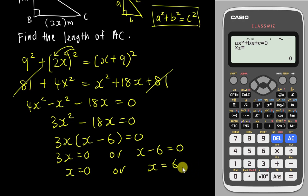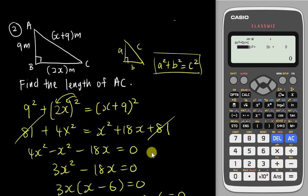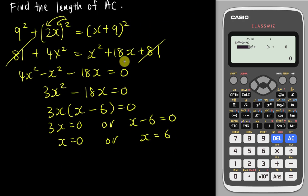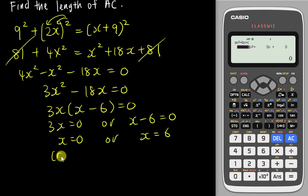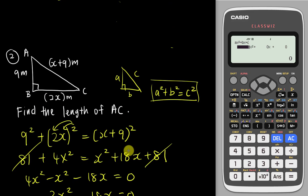But this is not the final answer — the question asks for the length of AC. Since x equals 0 would make the length of BC equal to 0, which is impossible, I reject x equals 0 and use only x equals 6. Therefore AC equals 6 plus 9 equals 15 metres. I hope you find this video helpful.